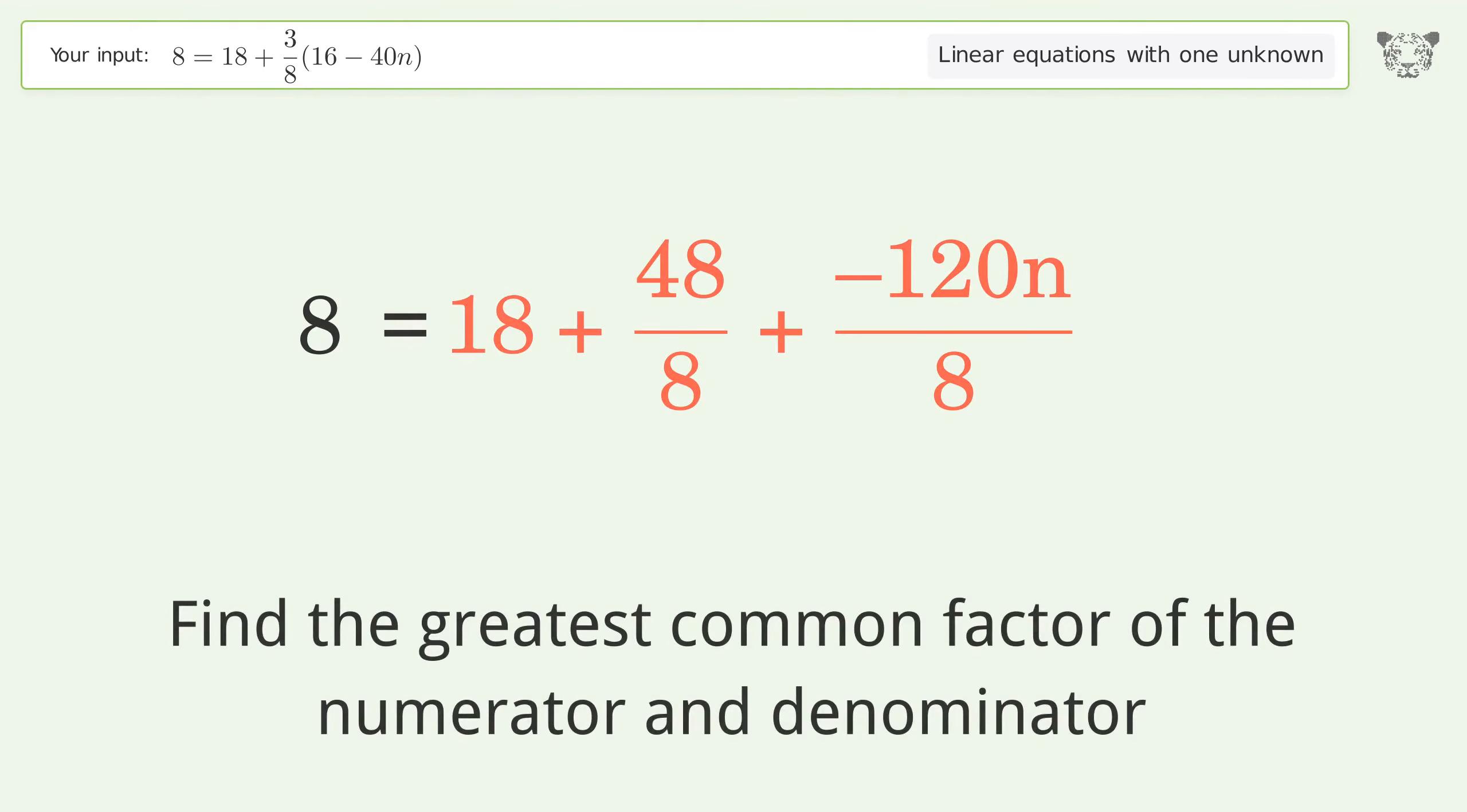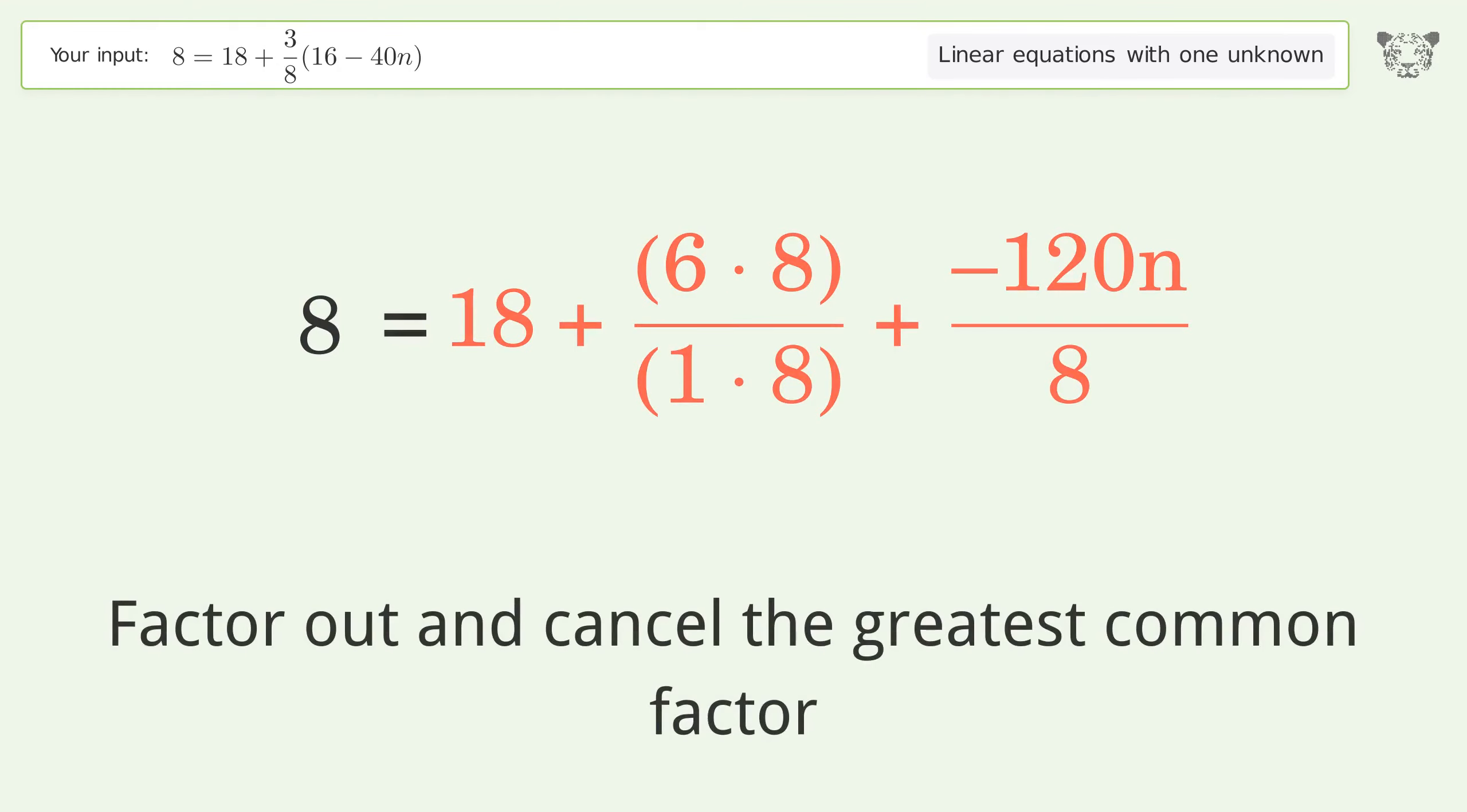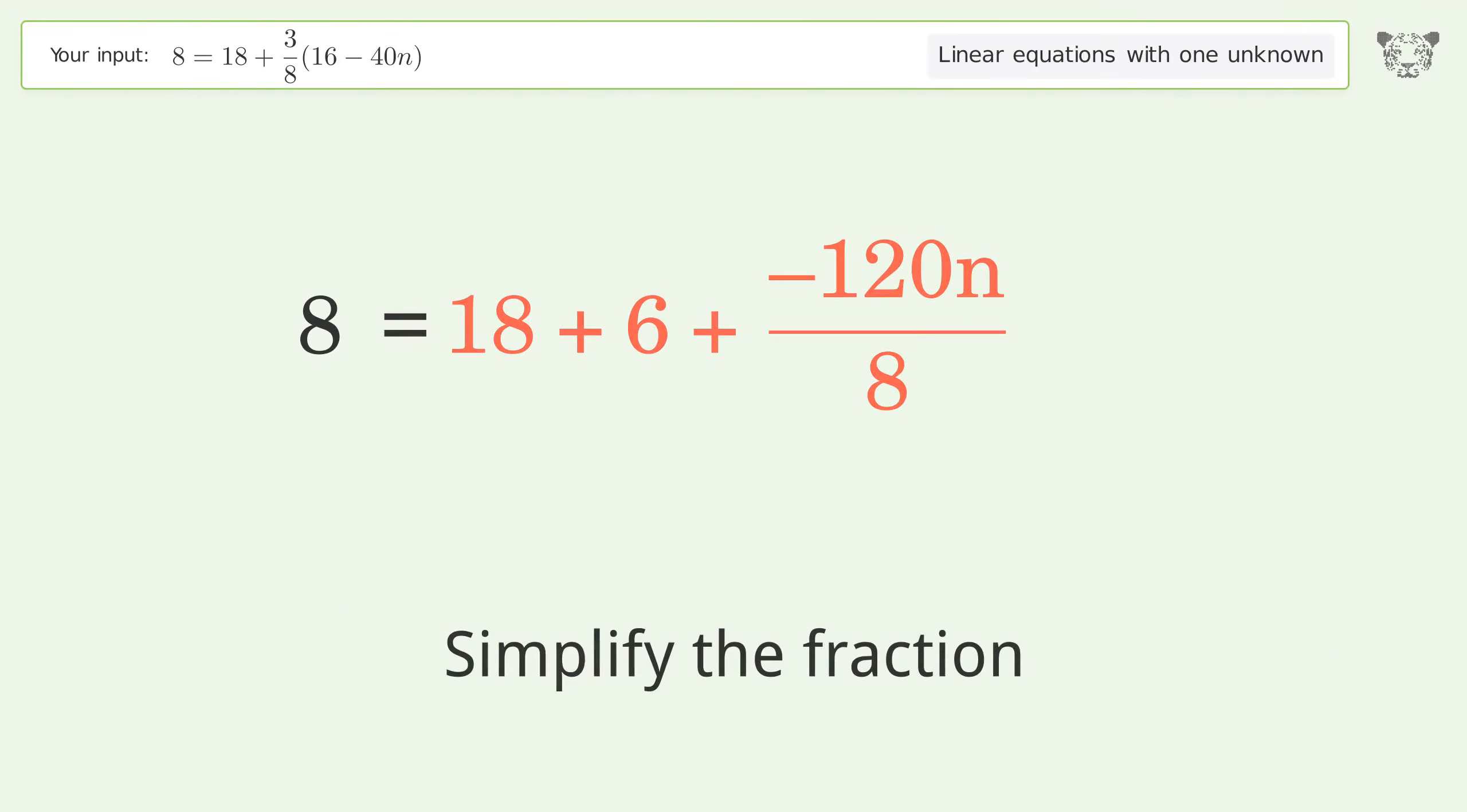Find the greatest common factor of the numerator and denominator. Factor out and cancel the greatest common factor. Simplify the fraction.